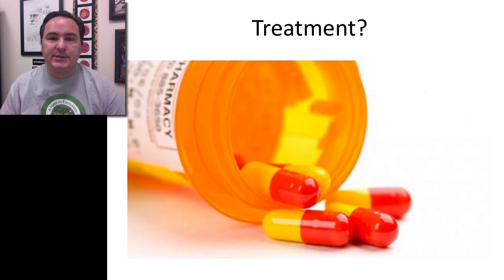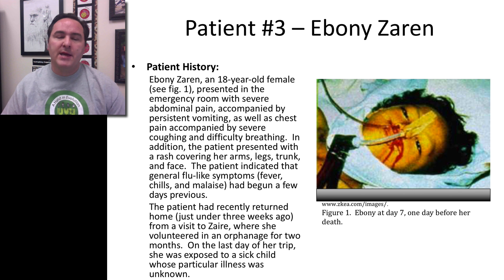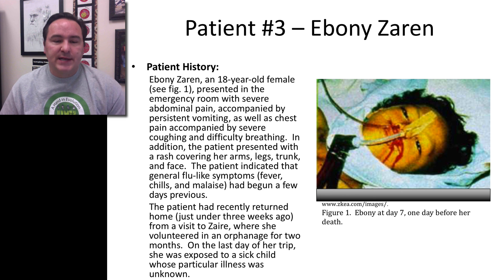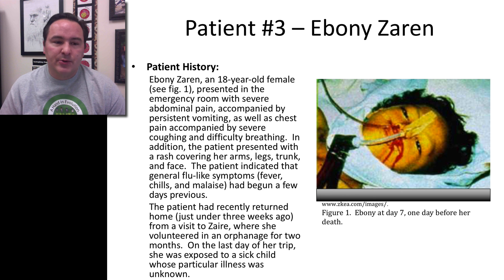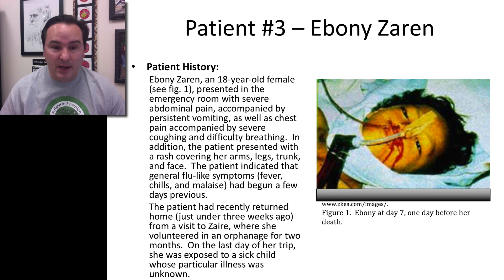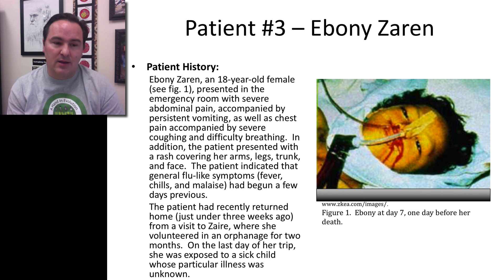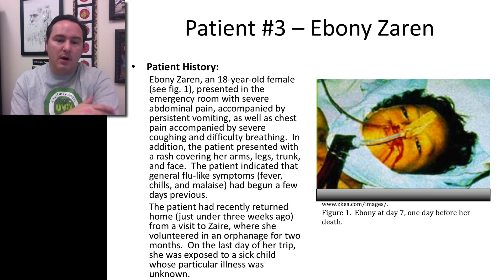Let's now look at two more patients. Patient number three, Ebony Zarin, an 18-year-old female presented in the emergency room with severe abdominal pain accompanied by persistent vomiting, as well as chest pain accompanied by severe cough and difficulty in breathing. This patient also presented with rashes covering her arms, her legs, her trunk, and her face.